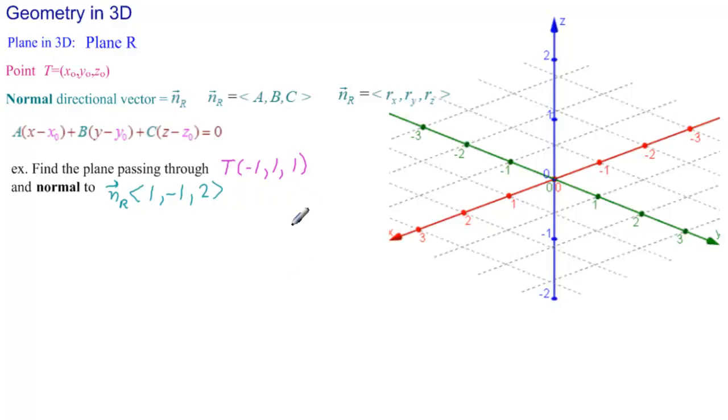So let's draw these two things, and then we'll pick up some software to draw the plane. The point is minus 1, 1, and 1. So there's T. The vector ends at 1, minus 1, 2. So that's the end point of the vector. So here's the vector, it's a directional vector, so it starts at 0, 0, 0, and goes to that point. So this is N R.